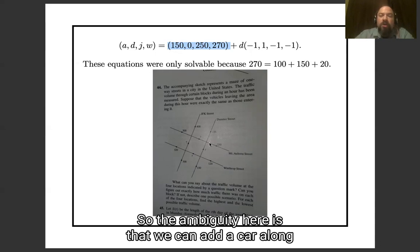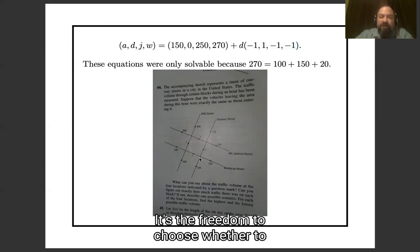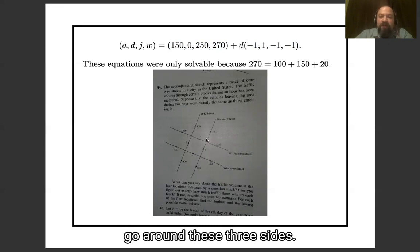So the ambiguity here is that we can add a car along Dunster and subtract cars in the other three positions and get exactly the same traffic flow in and out of the neighborhood. So that's sort of where your one free parameter comes from. It's the freedom to choose whether to go around these three sides or rather than just go up this street.